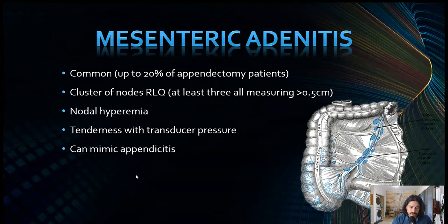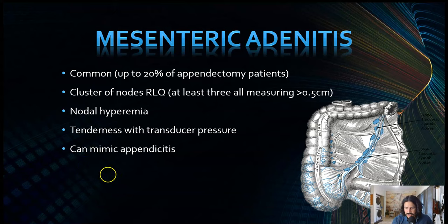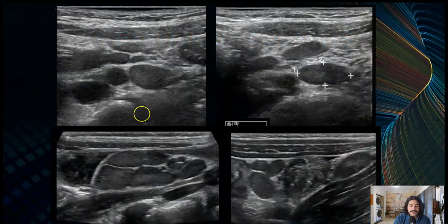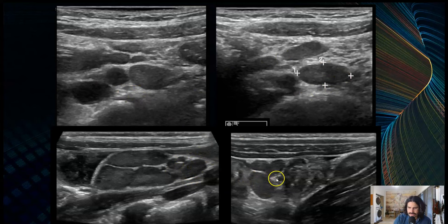Mesenteric adenitis is a diagnosis of exclusion — everything else is normal, no iliitis, no appendicitis, no colitis. You'll notice enlarged lymph nodes specifically in the right lower quadrant, usually a cluster greater than five millimeters. They will have hyperemia, and there can be tenderness when you press with the transducer. It can mimic appendicitis; in fact, 20% of patients with appendicitis also have mesenteric adenitis. Here you see the psoas muscle, iliac vessels, and a little cluster of lymph nodes — if you put color Doppler there, they will light up.